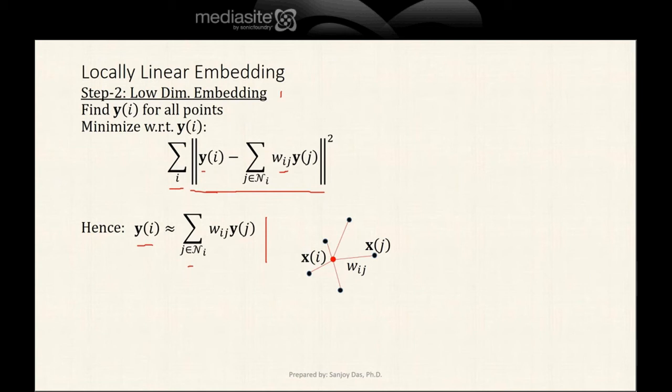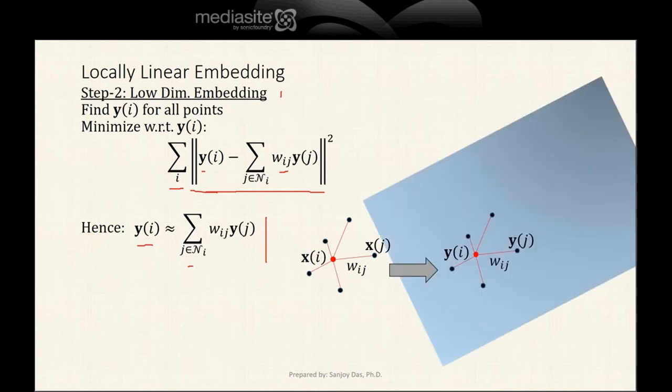After the minimization is done, we find the Yi. Since the Yi are assumed to be low-dimensional, these are the low-dimensional embeddings in another low-dimensional, m-dimensional hyperplane.